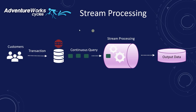For example, let's take the Adventure Works company. A customer makes a bike purchase. The transaction records are persisted in the underlying database supporting the application. Simultaneously, our stream processing engine takes this transaction and pushes it to a destination database. The data is processed as the events are taking place in the source.